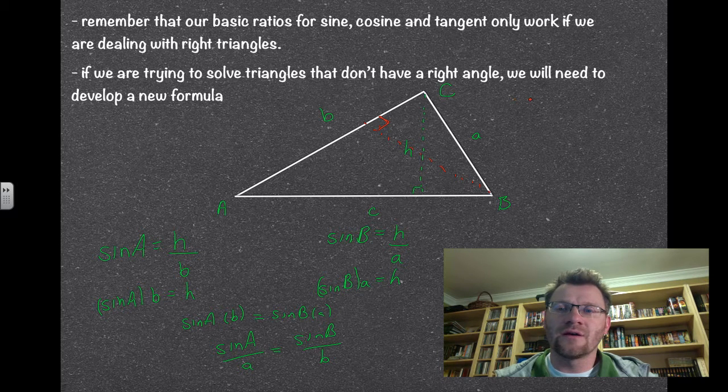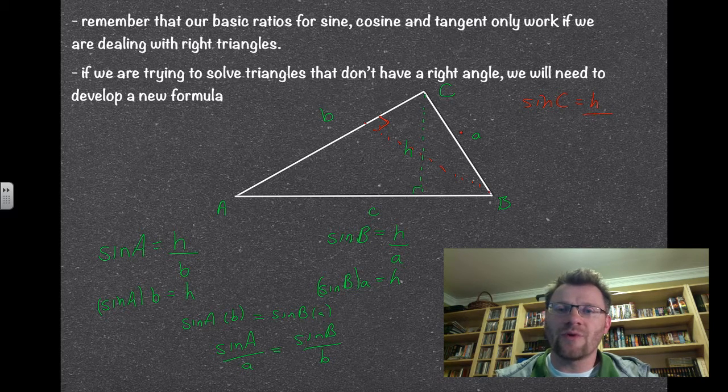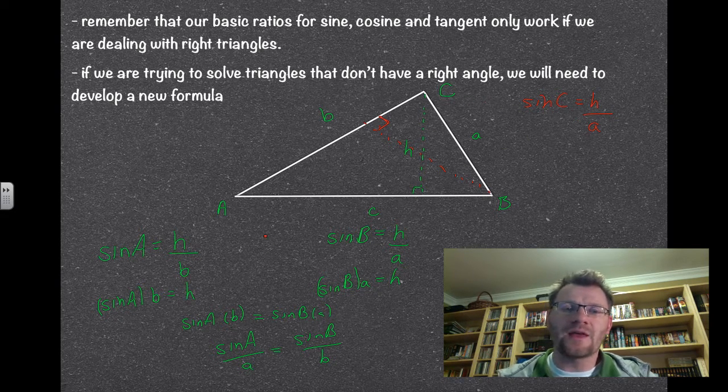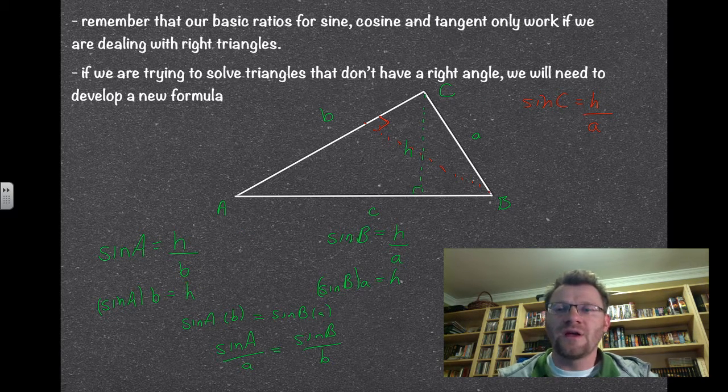In that case, I'm going to have sine c is the opposite side, which is the height, over the hypotenuse, which is a. Now that I know that this height is the same as this height over here, I can make those two ratios equal to each other.